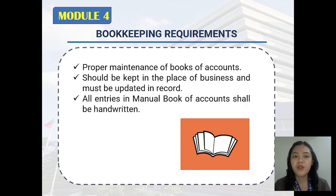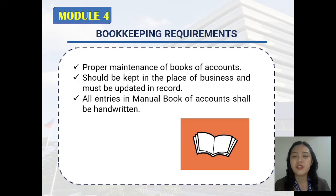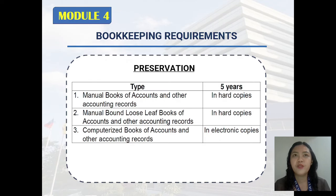For bookkeeping requirements, books of accounts must be properly maintained. They should be kept in the place of business and must be updated on record. Also, all entries in manual books of accounts shall be handwritten. For the preservation of manual books of accounts and manual-bound loose-leaf books, they must be preserved for five years in hard copies. For computerized books of accounts, they must be preserved for five years in electronic copies.